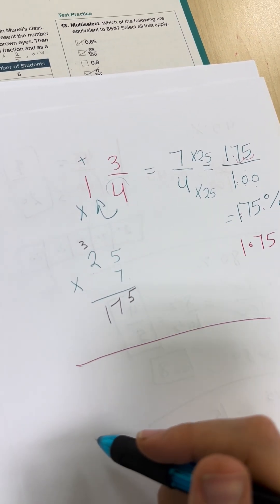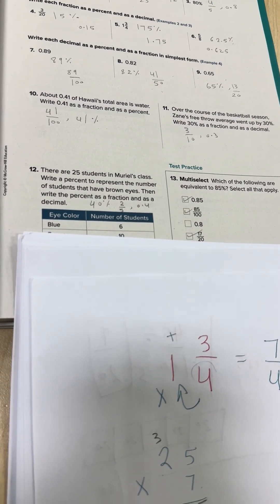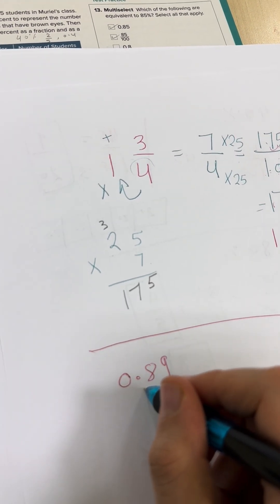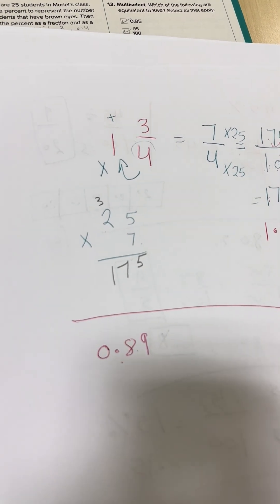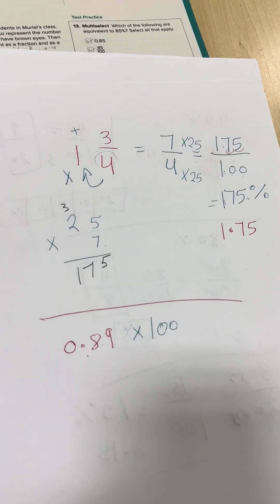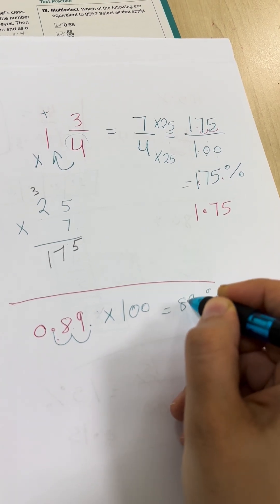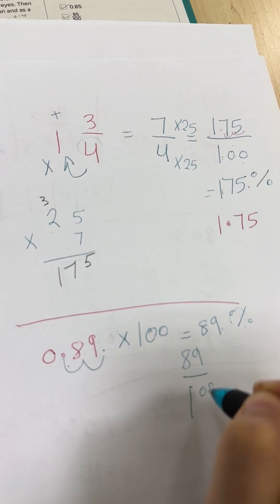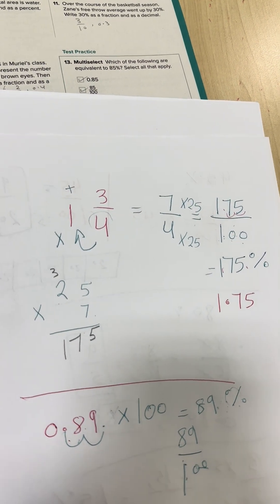Now question seven: write each decimal as a percent and as a fraction in simplest form. Take 0.89 — he gives a decimal and we want percent and fraction. First step: to change a decimal to percent, multiply by 100. Multiplication moves the decimal to the right two steps: one, two — equal 89 percent. As a fraction: 89 over 100.